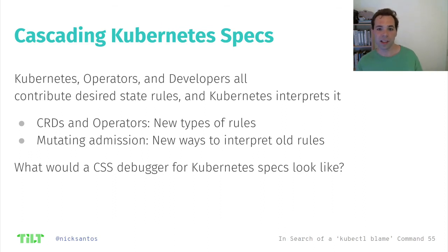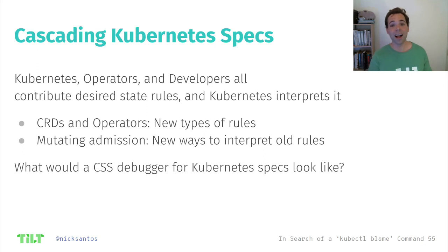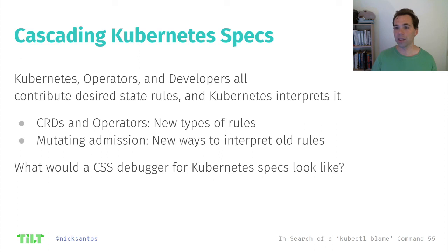Lastly, I want to tease you a bit. The Kubernetes ecosystem is only going to get more complicated. We're seeing more custom resources, and we're starting to see mutating admission controllers, which are really cool but they modify pods and add sidecars, volumes, and other things — and we can't tell they came from those mutating admission controllers. What would a debugging experience look like that was as nice as the CSS debuggers of today, that lets you see a hierarchy of rules, see what change each one made, and attribute blame?